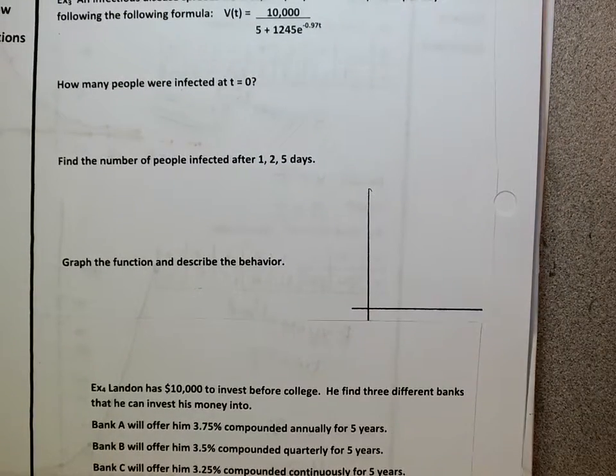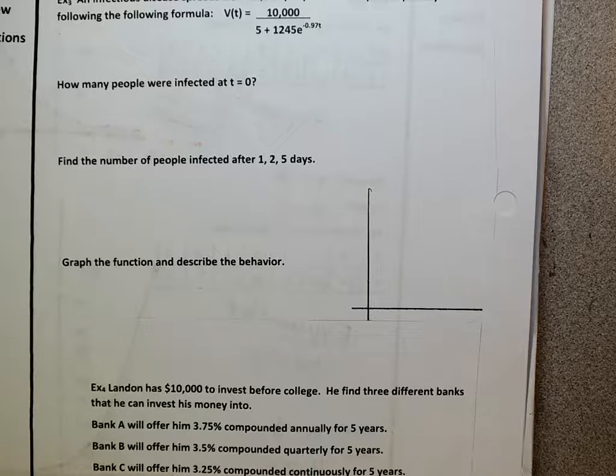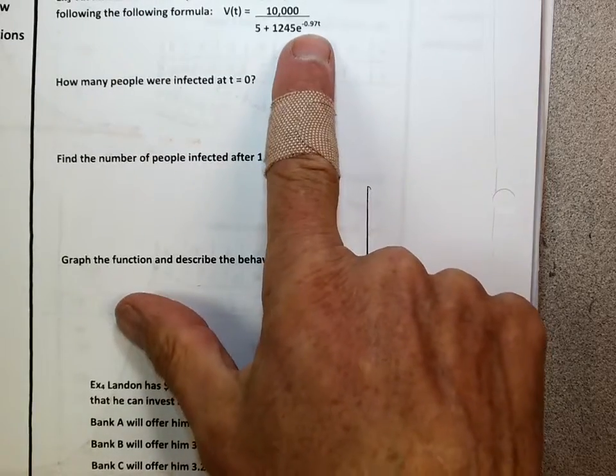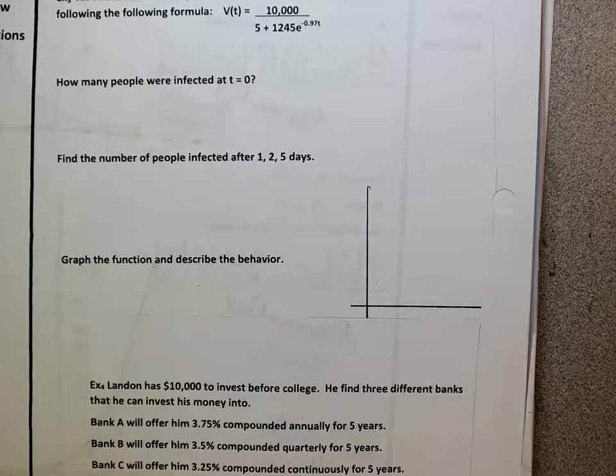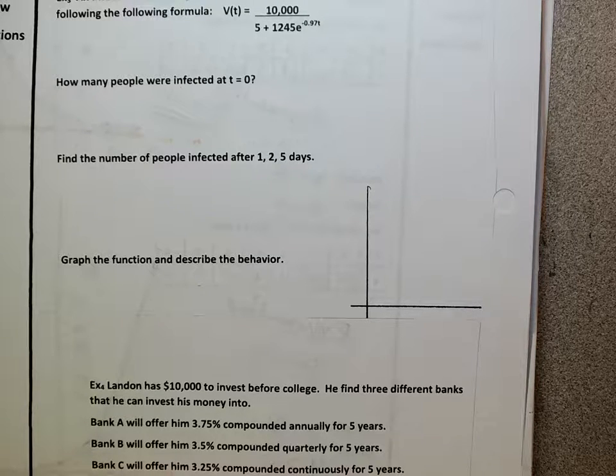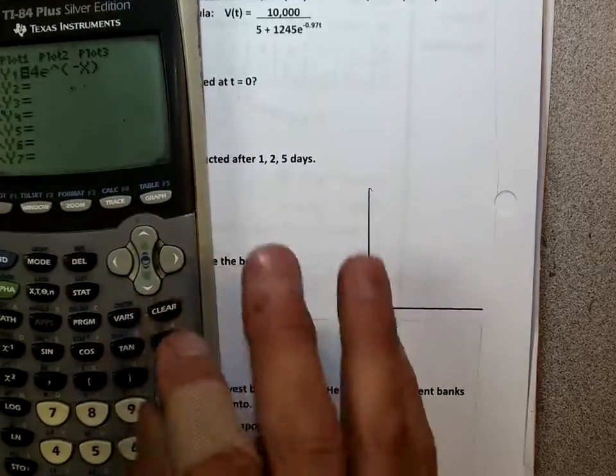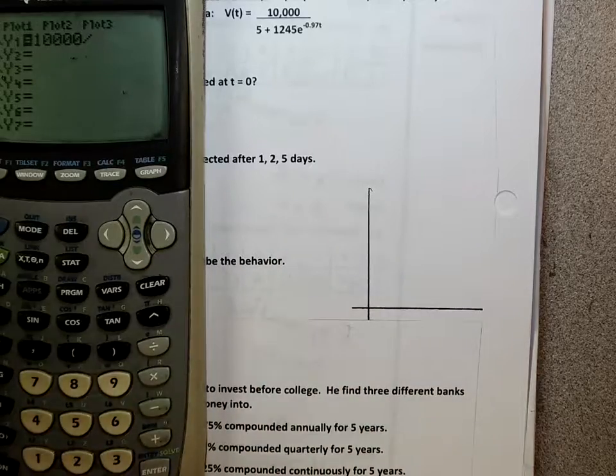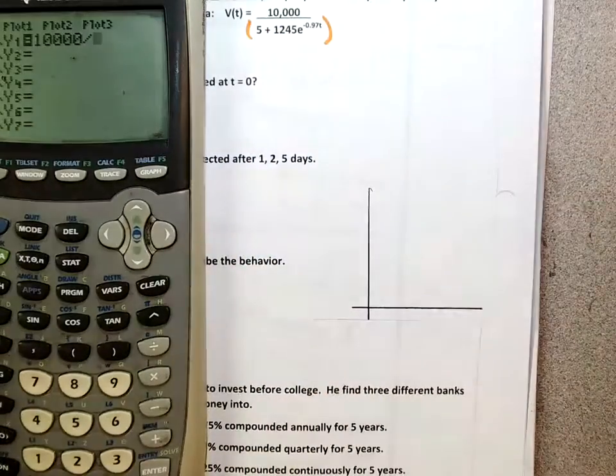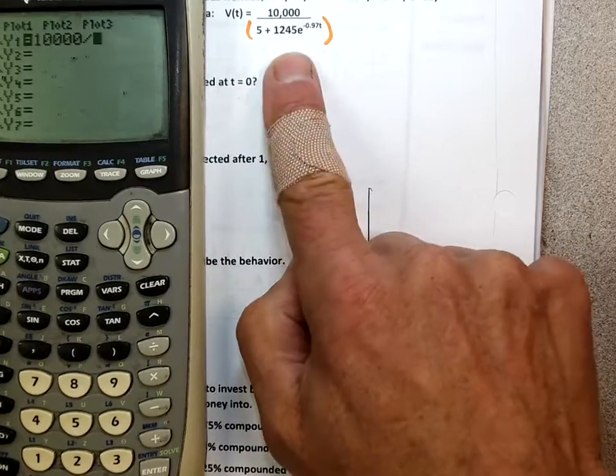So, example 3. An infectious disease spreads from 10,000 people and spreads per day the following formula. Now, what happens is that we've got an E equation, but it's in the denominator. So, what's going to happen is this. This is a real-life equation because, like most diseases, they spread quickly, right? But then, after a while, people start to get well. There's vaccinations. And the population will start to, once again, level off. So, to graph this, let's go straight to putting in the calculator.